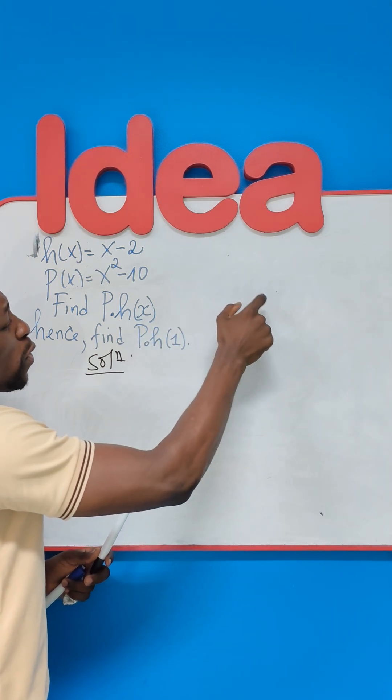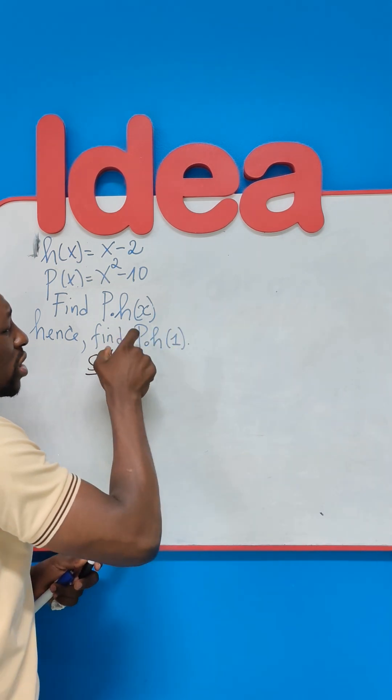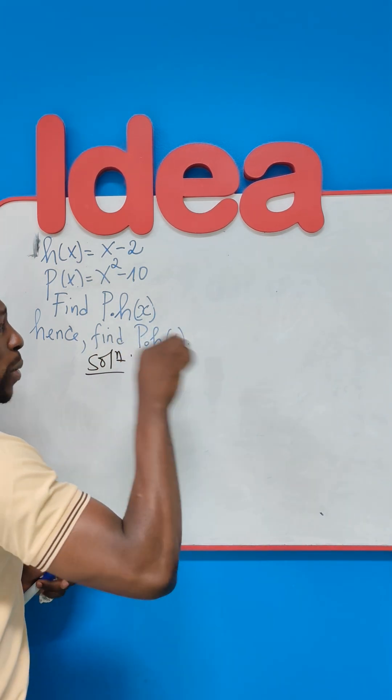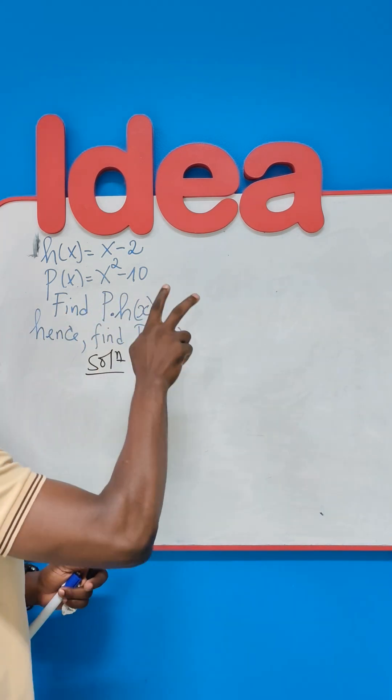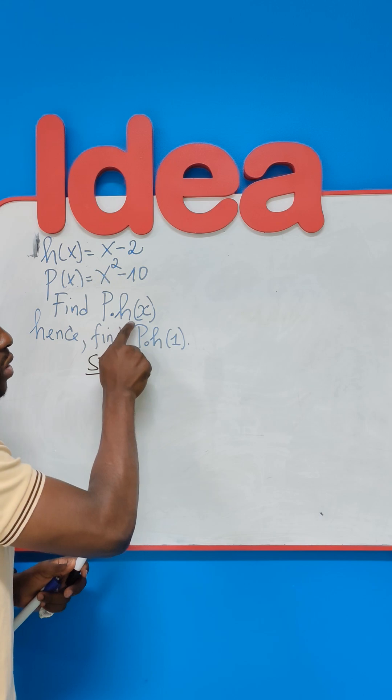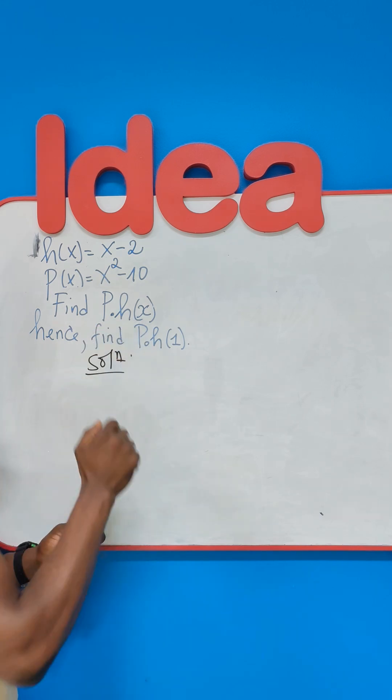Suppose we had about three, four, five functions here which are to be composited, a permit expression. We'll start from the innermost function, getting towards the outside. So in this case, we have just two. We are supposed to substitute the function H of X in the function P of X.